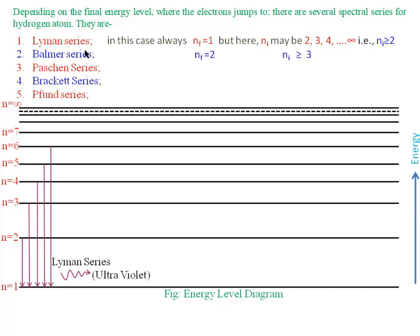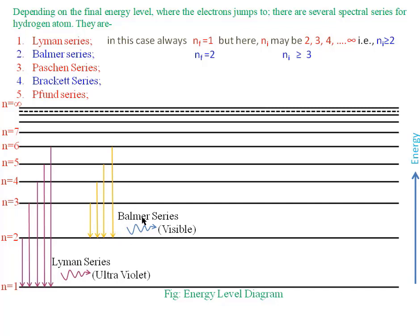In the case of the Balmer series, nf equals 2 and ni is greater than or equal to 3. That means electron transitions take place from 3 to 2, 4 to 2, 5 to 2, and infinity to 2. All these spectral lines form the Balmer series, which lies in the visible region.